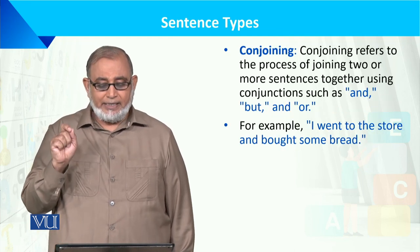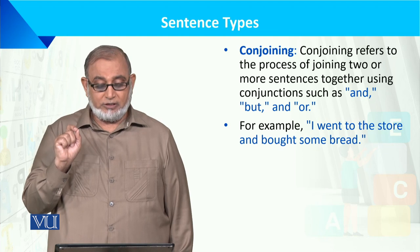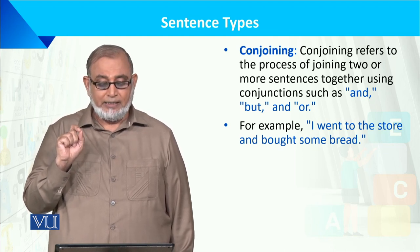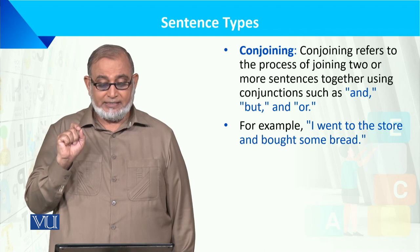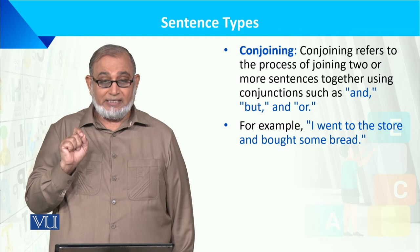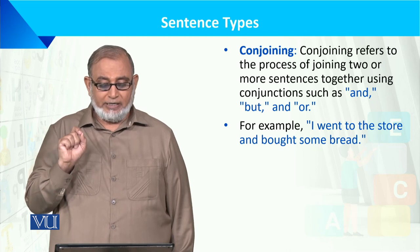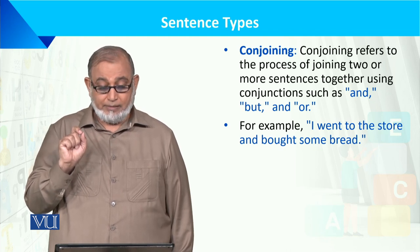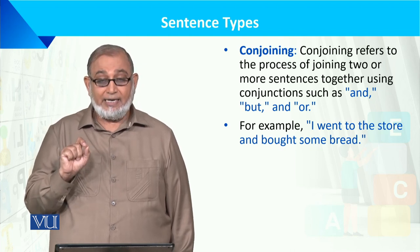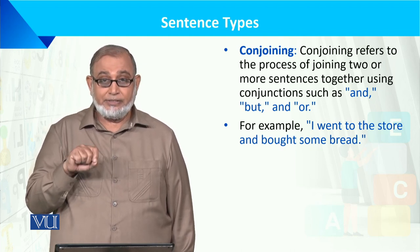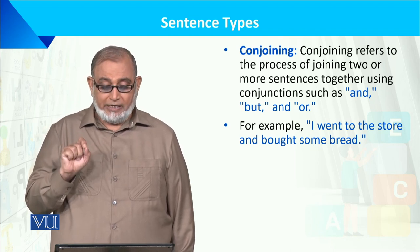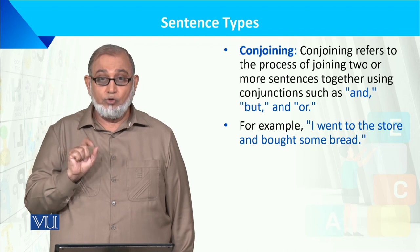Conjoining refers to the process of joining two or more sentences together using conjunctions such as 'and,' 'but,' and 'or.' For example: 'I went to the store and bought some bread.' So this is two clauses joined by the conjunction 'and.' These are the conjunction words that are used to combine sentences.